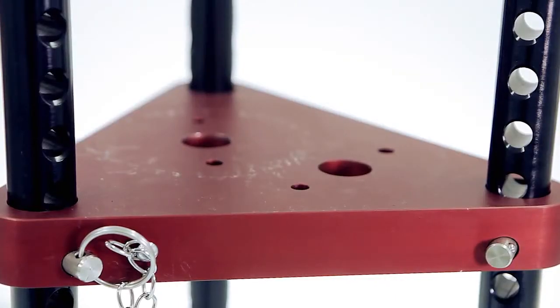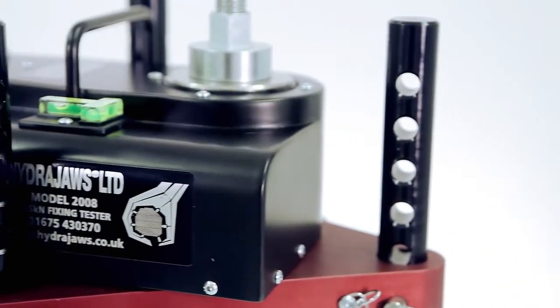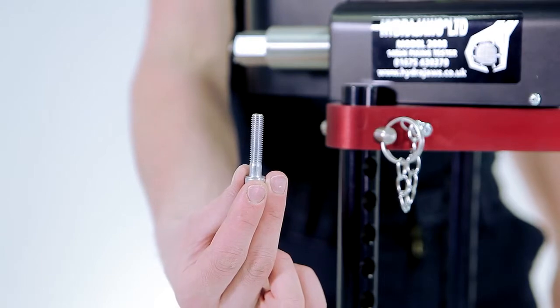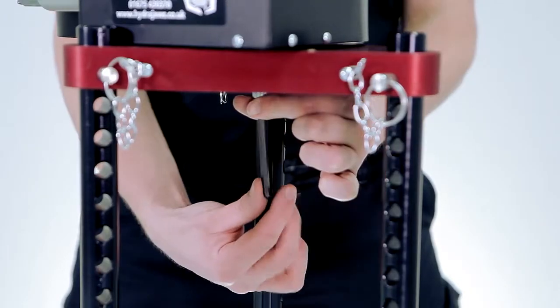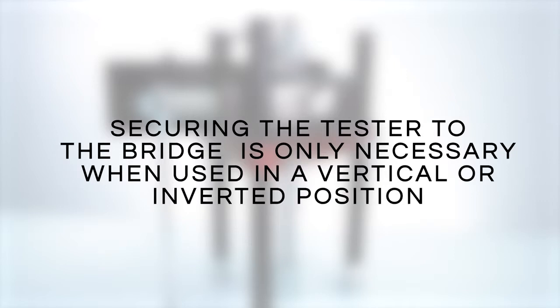The tester can be secured to the bridge plate in these two positions with the supplied cap screws. Securing the tester to the plate is not crucial when the tester is being operated in a horizontal position, however it is essential when the tester is in a vertical position or inverted.